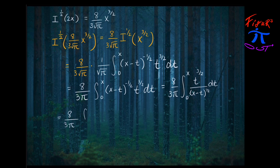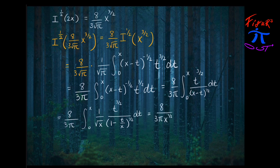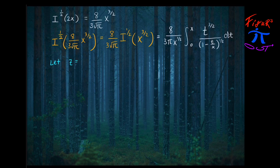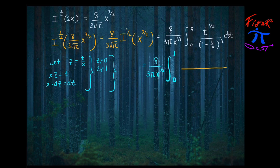A clever trick: we factor a √x out of the denominator and rearrange the inside of the square root to match a substitutable form. That gives a new integrand. Since x is just a constant here and t is the variable of integration, once we have it in this form and pull x to the 1/2 power outside the integral, we let z = t/x. Then x dz = dt, and the limits of integration change from [0, x] to [0, 1]. The integrand becomes z to the 3/2 power times x to the 3/2 power times x dz, divided by (1−z) to the 1/2 power.